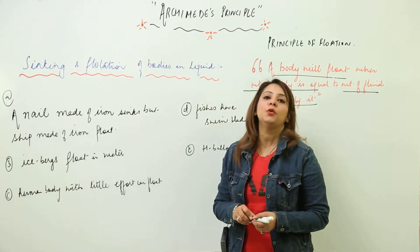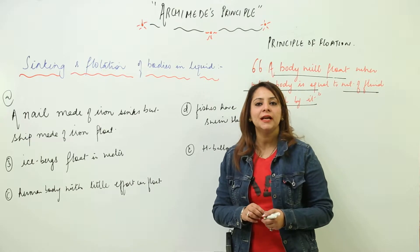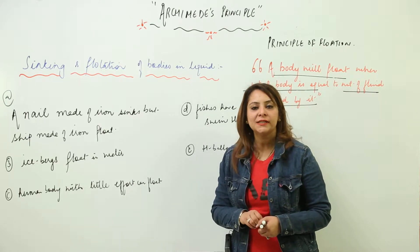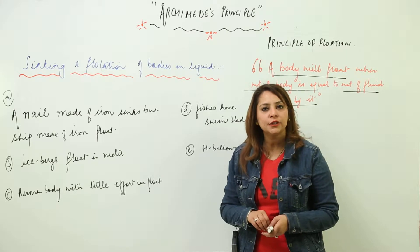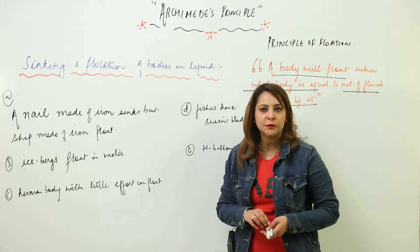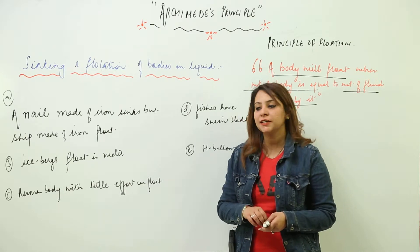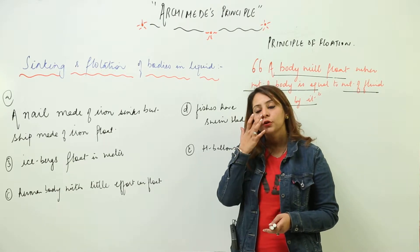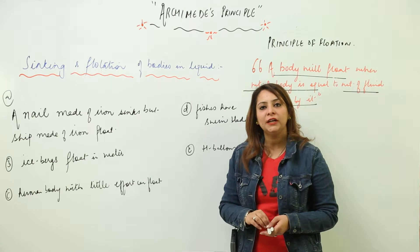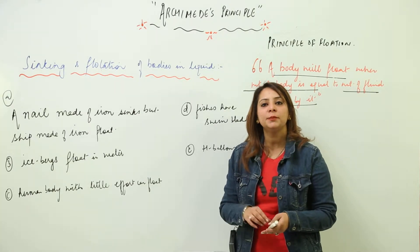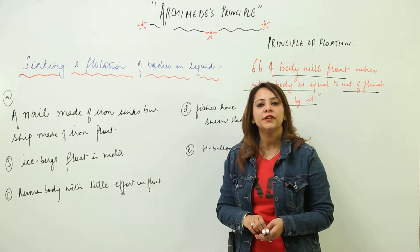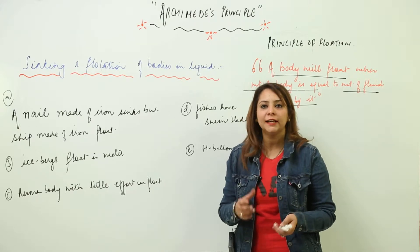For a body to float, we have already discussed that the condition is that the density of the body should be equal to the density of the water displaced by it. This is what happens in case of a ship because the ship is hollow from the bottom. So its average density decreases and becomes equal to the density of the water and it can float.